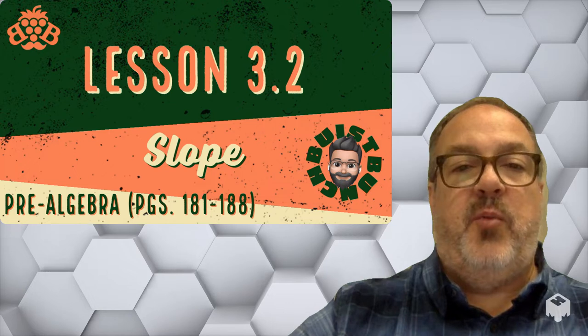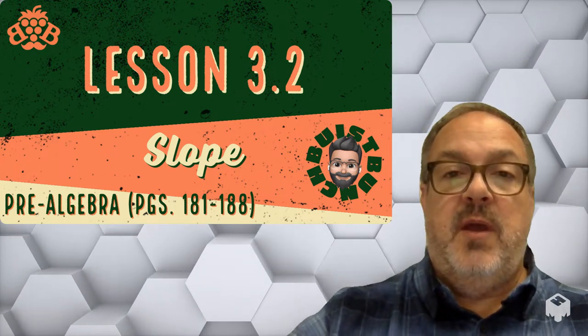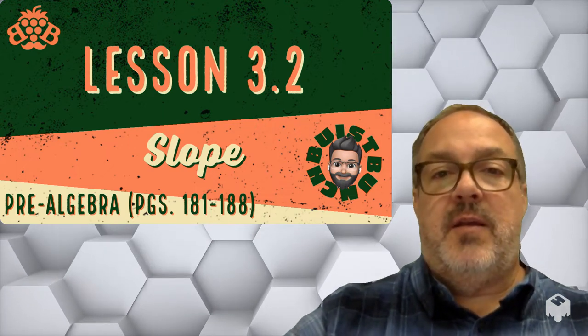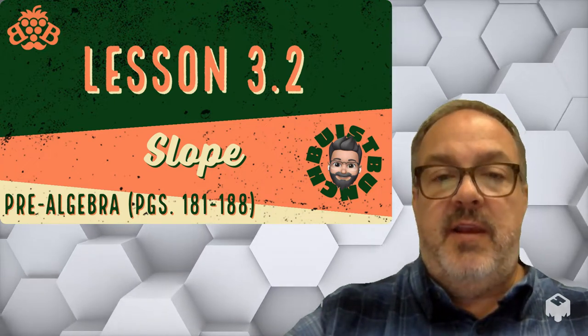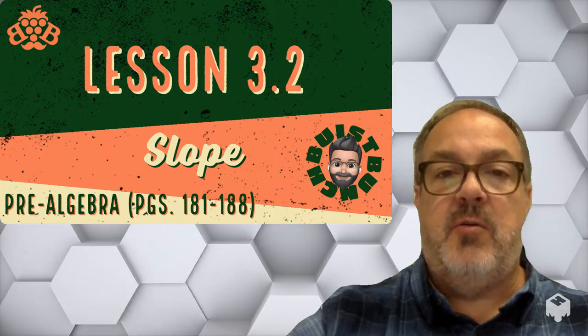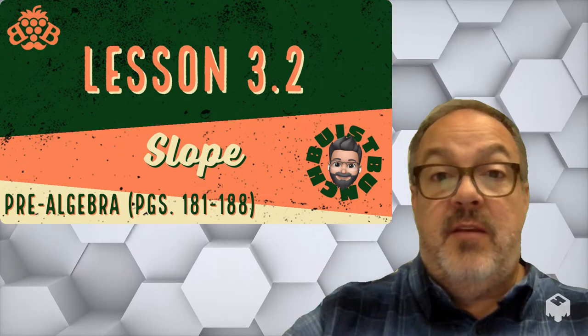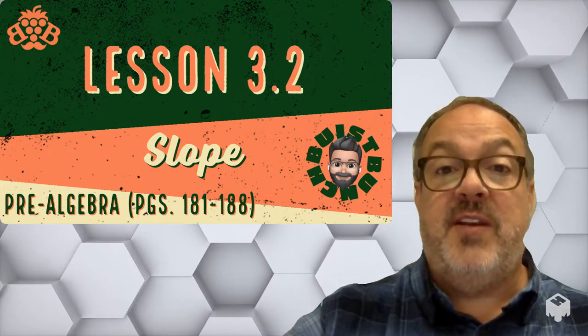In Lesson 3.2, we're going to focus on the idea of slope. What slope refers to is a couple of things. One, it's the steepness of a line. It also represents the ratio of the change in one quantity and the change in another quantity. We'll see a few examples in today's lesson.